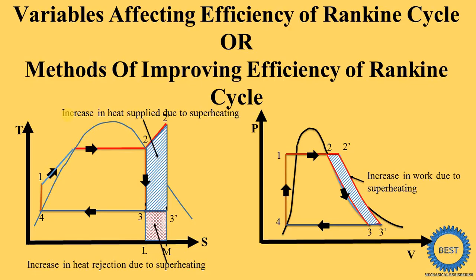Before moving to the detail, we need to understand what the TS diagram and the PV diagram indicate. The PV diagram is used to find out the work produced or work supplied during a process. For example, the one-to-two process is heat addition in the boiler, and the two-to-three process is isentropic expansion. The area under the two-to-three line represents the amount of work done produced by the turbine. The area enclosed by points one, two, three, four indicates the net work produced.